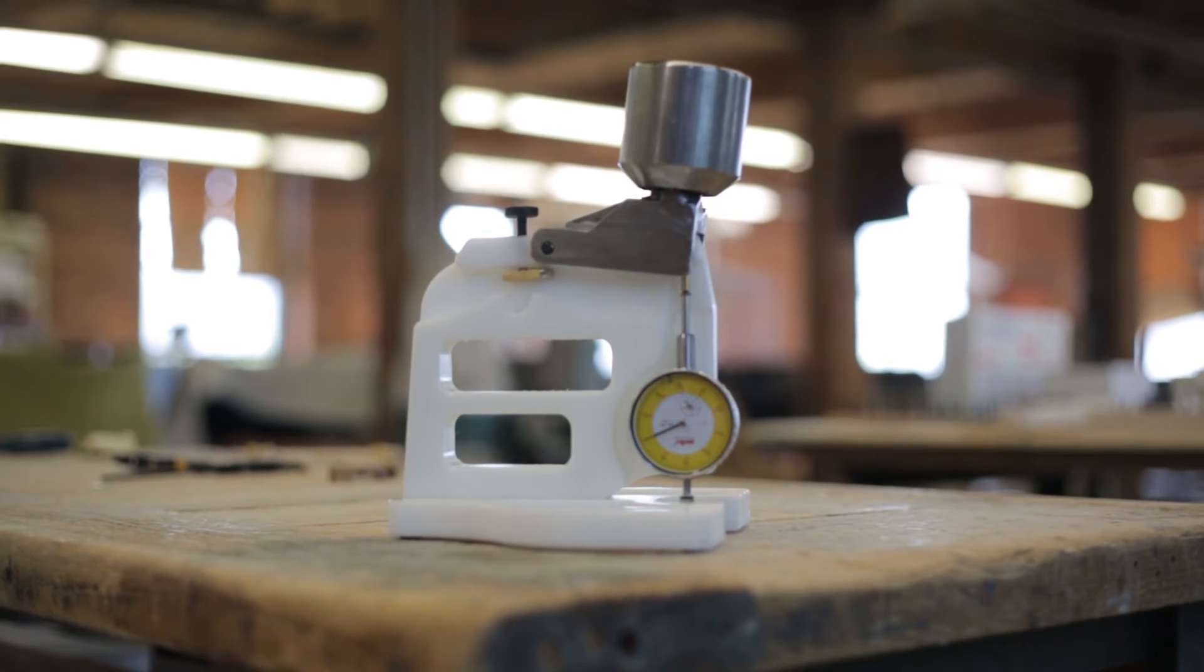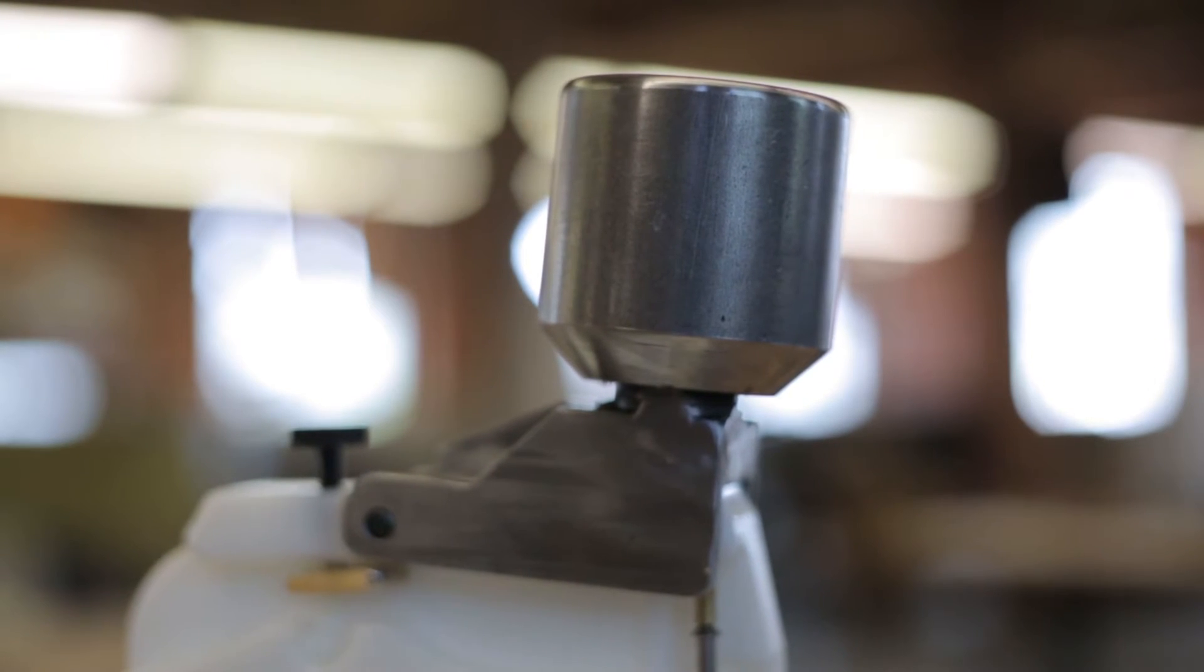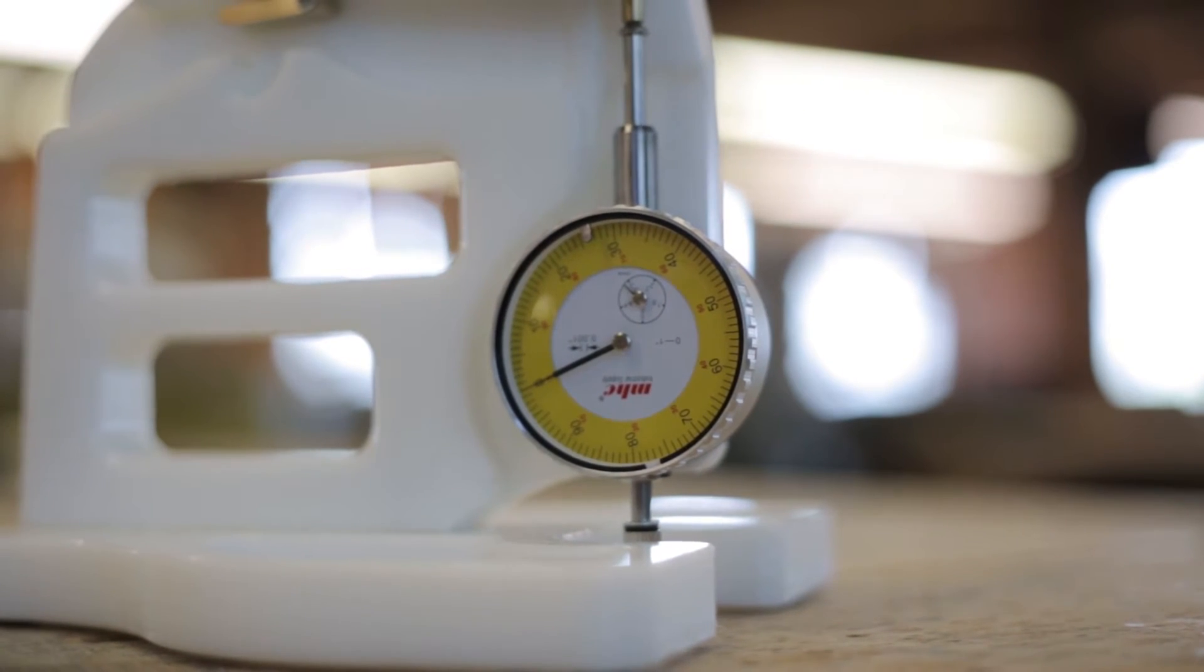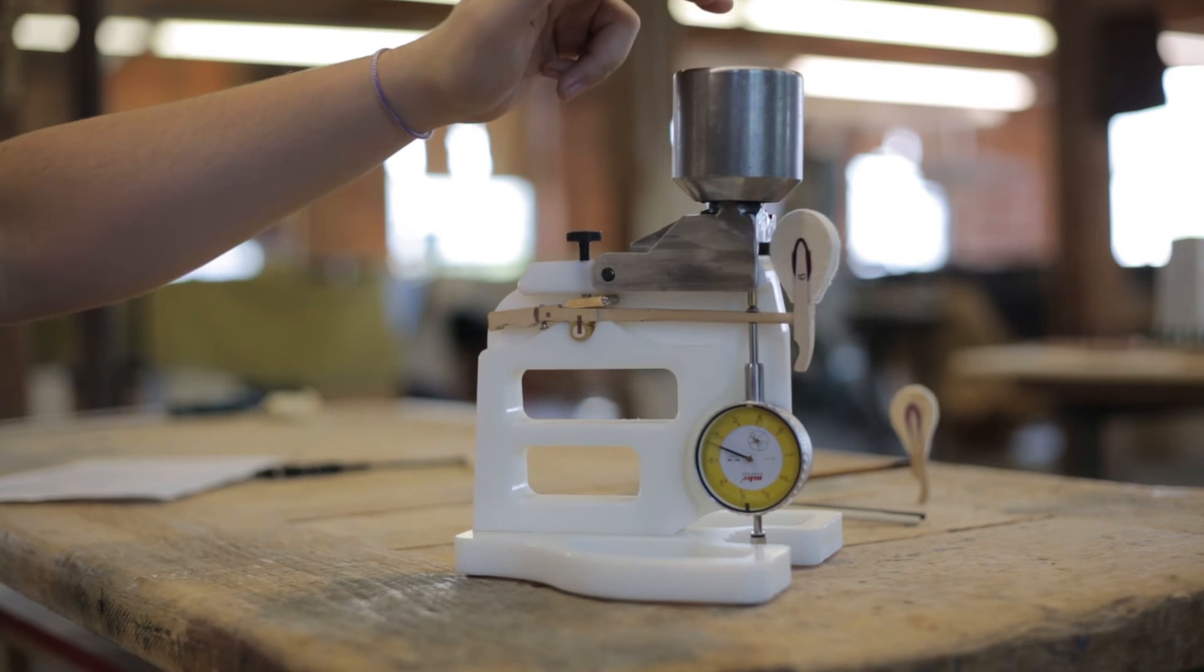The W&G shank deflection gauge works by applying a 4-pound weight to the end of the shank and measuring the distance it travels with a dial indicator. Since we measure shank strength on how much a shank bends, a stronger shank will have a smaller reading, while a weaker shank will have a higher one.